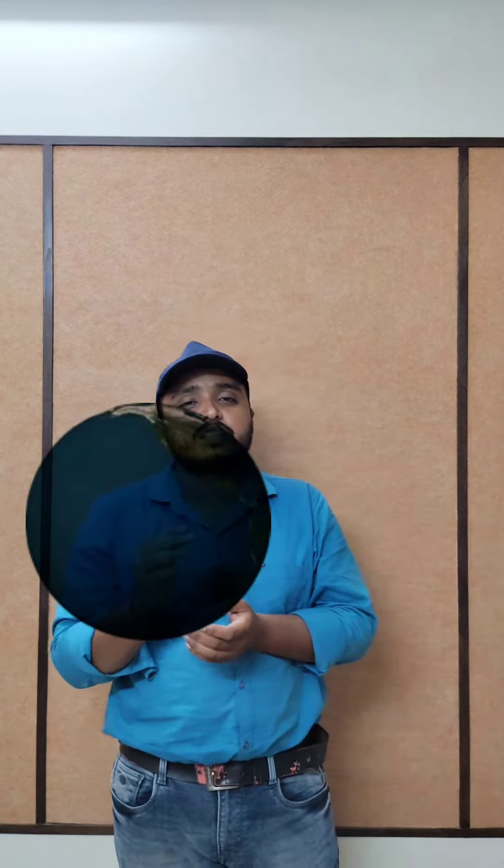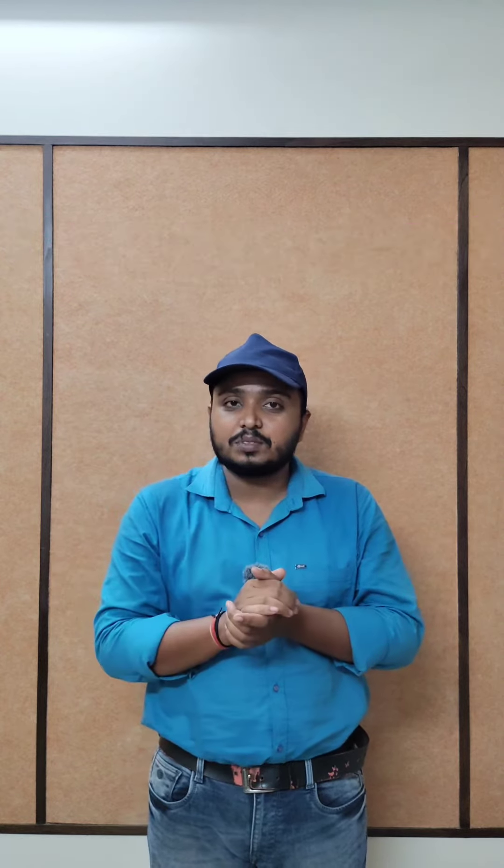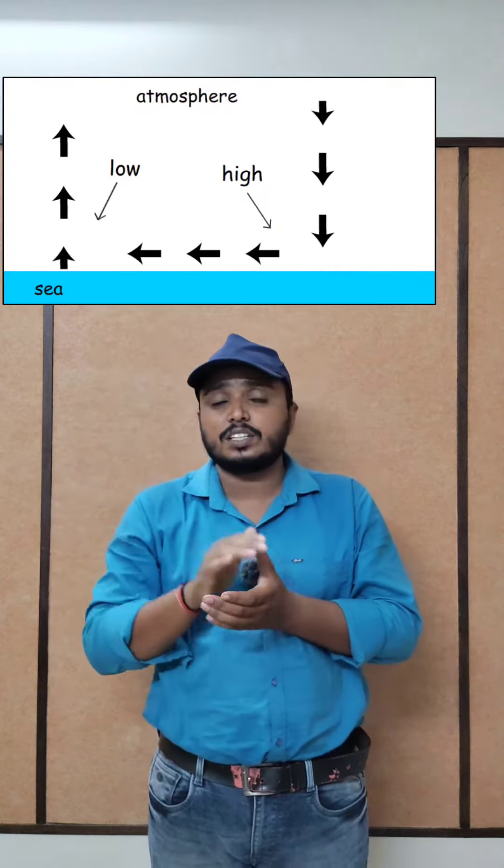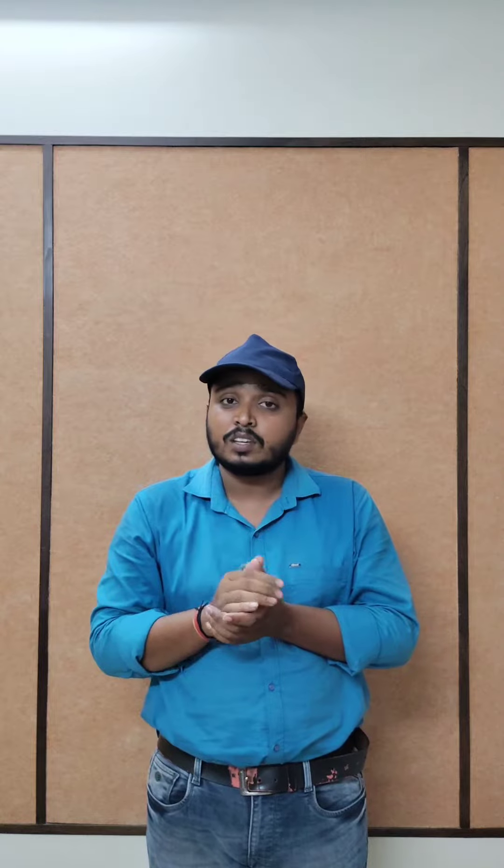And the rotation of earth causes the Coriolis effect. Yeh kaise kaam karta hai samjhata hon. We all know ke air ka jo flow hoga wo humeysha high pressure region se low pressure region ki taraf rahega in the northern hemisphere.